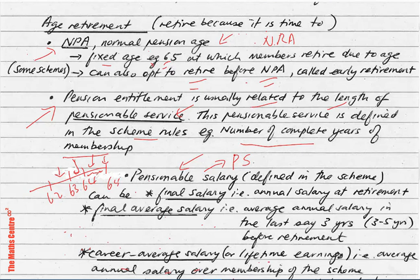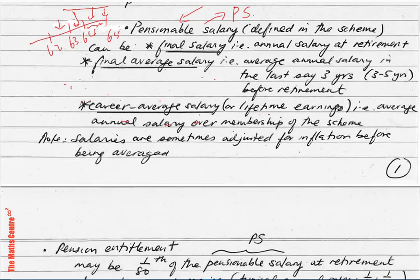Then we have the career average salary, also known as lifetime earnings — the average annual salary over membership of the scheme. If you've been a member for 20 years, you add your salary over those 20 years and divide by 20 to get your career average salary. So your pensionable salary can be your final salary, final average salary, or career average salary.